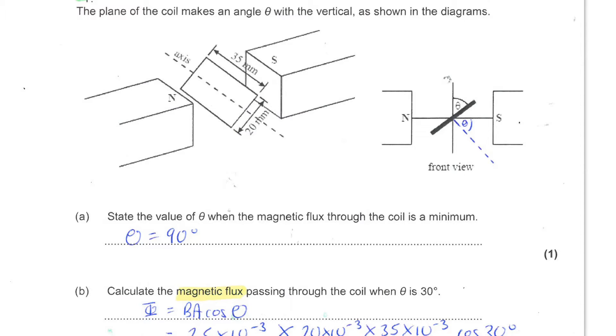A rectangular coil measuring 20 by 35 millimeters with 650 turns is rotated about a horizontal axis which is at right angles to a uniform field of flux density 2.5 times 10 to the minus 3 tesla. Do look at the diagram as you read the question and just gather the information and let yourself get your head around it.